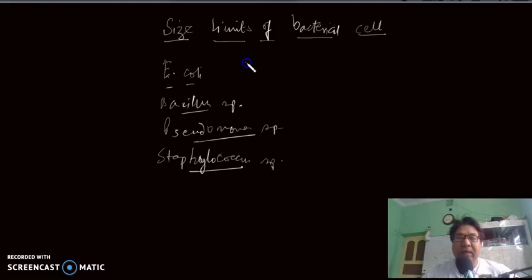E.coli is a rod-shaped bacteria. Its size might range from 1 micrometer diameter to 3-5 micrometer length. Bacillus is also a rod-shaped bacterium, maybe a little bigger than E.coli or of the same size. Its size is also 1 micrometer by 5-10 micrometer.